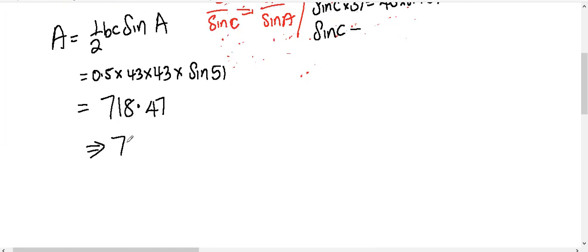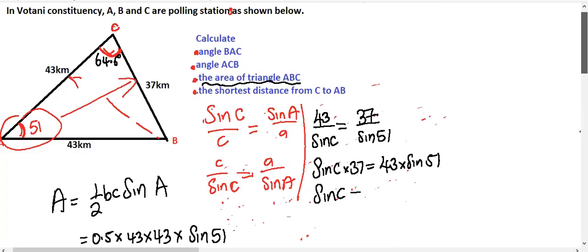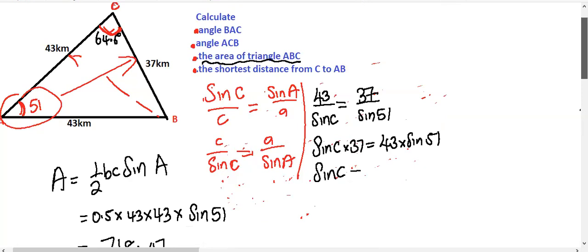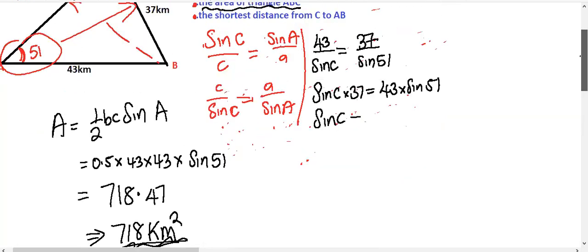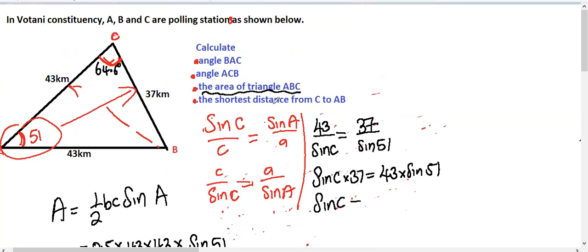Rounding to three significant figures, the area is 718 km². Now we are asked to find the shortest distance from C to AB. The shortest distance is the perpendicular height from C to the base AB.